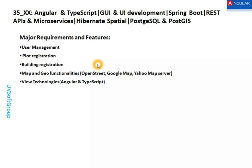You need a user management system, plot registrations, building registrations, maps and geo functionalities with OpenStreetMap, Google Maps, and Yahoo Maps. The view technology chosen is Angular with TypeScript. These are the prerequisites of our plan to implement the complete features and functionalities. A plot means if you are living in a city area, you have plots and plots have multiple buildings — I will show you how this relationship works when I start the real development. This is the theoretical presentation on which technology we use, why we use it, and what the possibilities are.